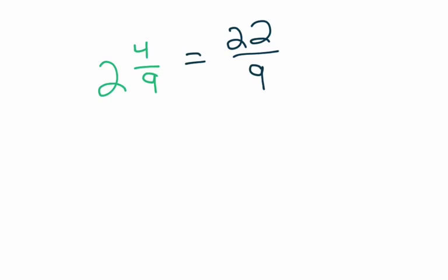So now we can go ahead and put our numerator underneath and our denominator out front. And we ask ourselves, how many times does 9 go into 22? Well, we should know from above that if our original problem was 2 and 4 ninths, then 9 has to go into 22 two times. 2 times 9 is 18.